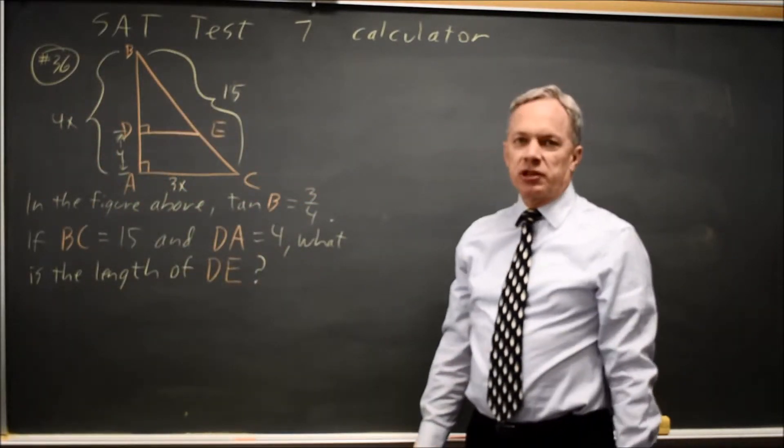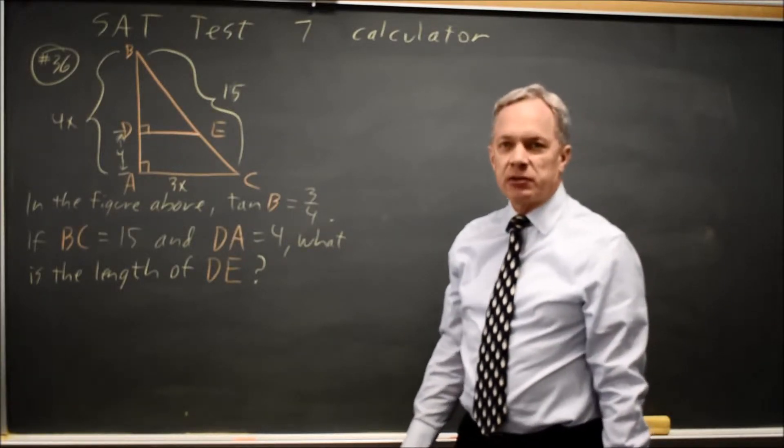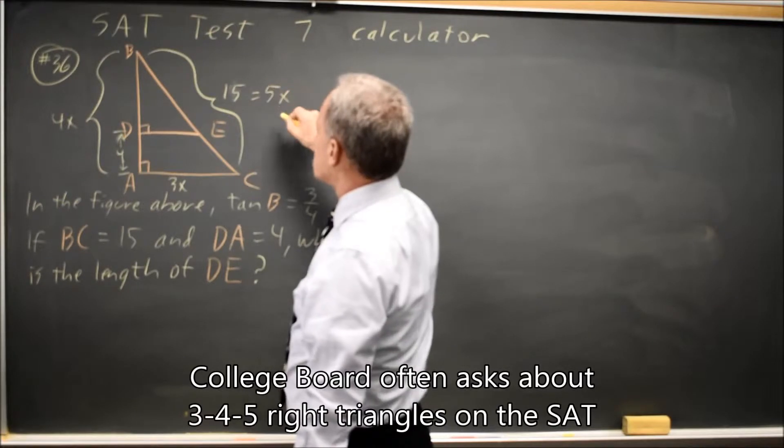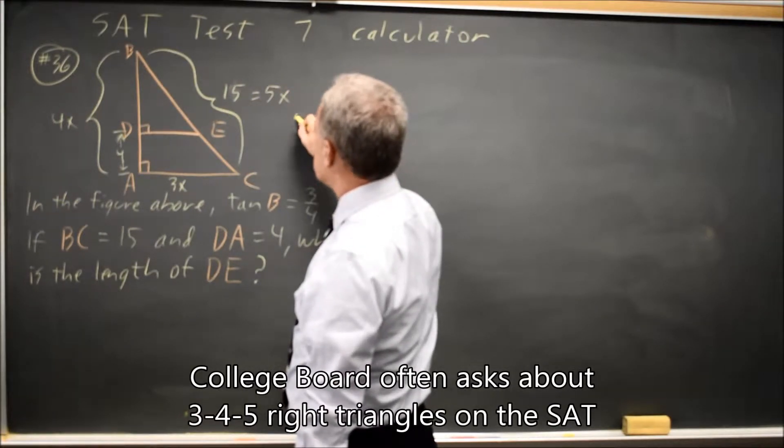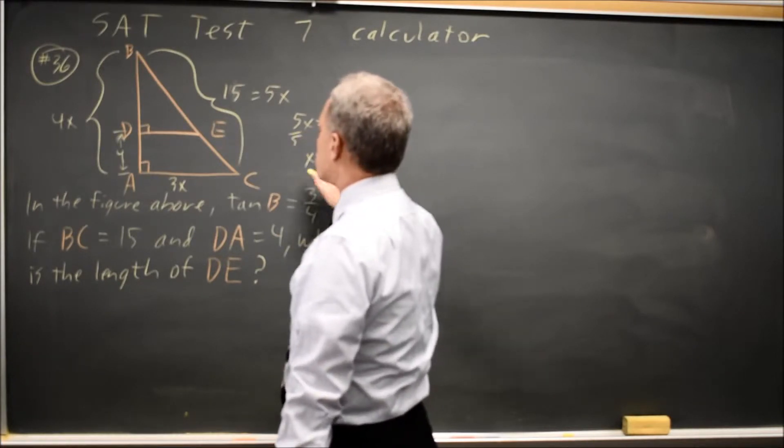And if I have a right triangle with sides in ratio of 3 to 4, the hypotenuse will be 5X. Since 5X equals 15, divided by 5, X equals 3.